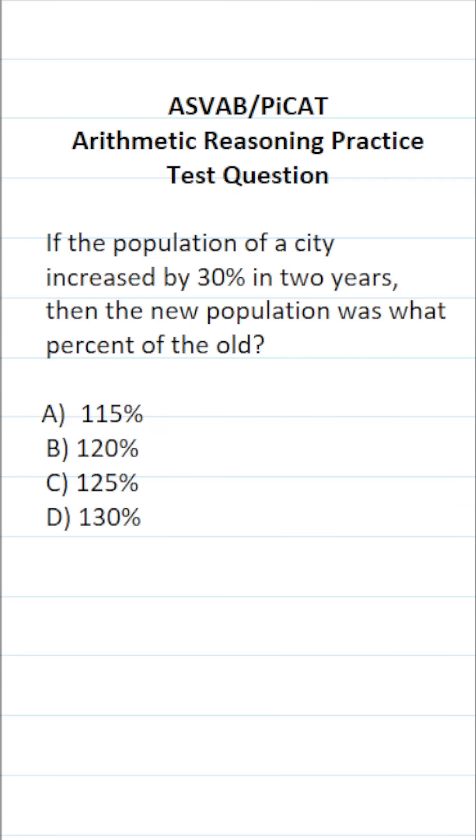This arithmetic reasoning practice test question for the ASVAB and PiCAT says, if the population of a city increased by 30% in two years, then the new population was what percent of the old?